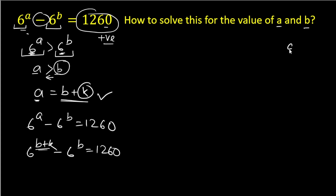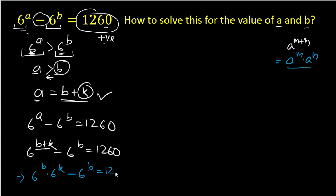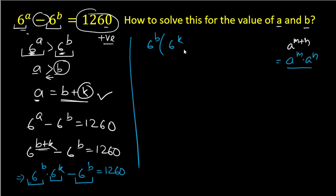The exponent b+k is in the form m+n, and we can use the rule a^(m+n) = a^m × a^n. So we rewrite this as 6^b × 6^k minus 6^b equals 1260. Now 6^b is common to both terms, so we factor it out: 6^b × (6^k − 1) = 1260.